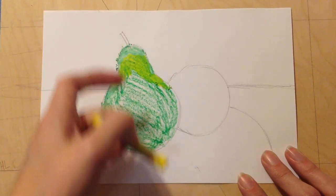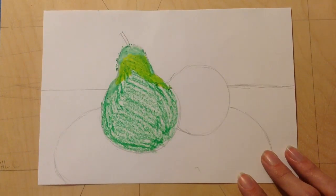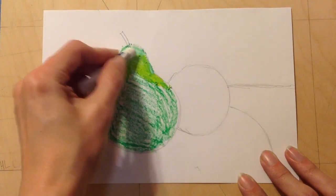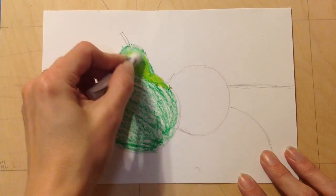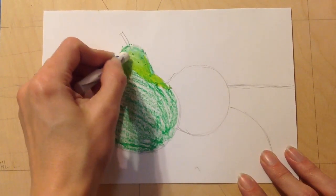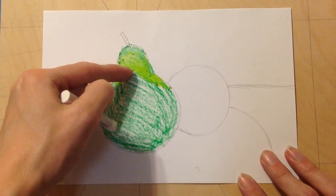Instead of being like rainbow stripes, I want it to blend together to go from light to dark. I'm just adding a little bit more here so that it doesn't look like I have a stripe of white and a stripe of yellow.